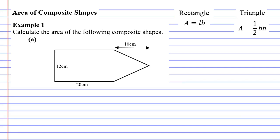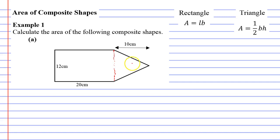Area of composite shapes. Composite shapes is where two or more shapes have been composed together. For instance, in example 1A, we have two shapes that have been composed or put together. And if I draw a red dotted line, you can see I have a rectangle and a triangle.